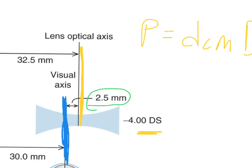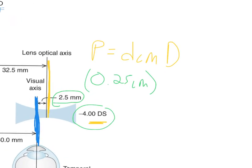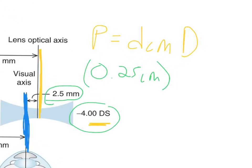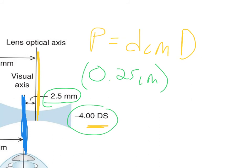And it has to be in centimeters. So it will be 0.25 centimeters times the power of the lens. In this case, the power of the lens is minus 4. And you don't have to put the minus sign. The minus sign will be omitted. So just 4, 4 diopters.